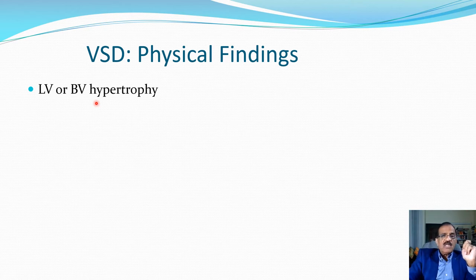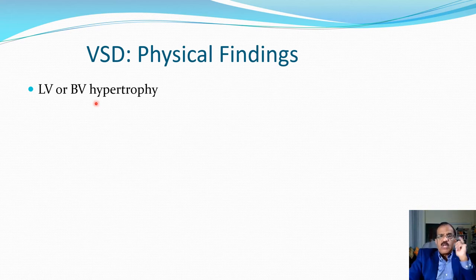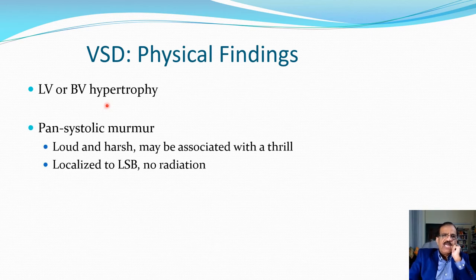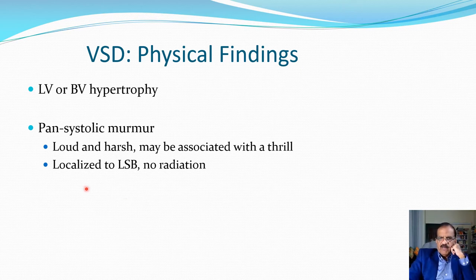Right ventricular hypertrophy may also develop because of increased pulmonary circulation and increased pulmonary pressure, meaning the right ventricle works against greater afterload. So you may see a combination of left ventricular hypertrophy or biventricular hypertrophy in VSD.